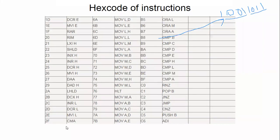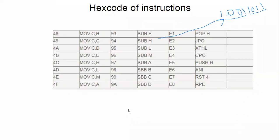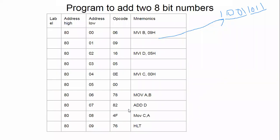These are all the mnemonics and their equivalent hex codes. JMP without any condition is C3. JNZ — jump on no zero — is C2. Depending upon the flag bits, if you want to check the zero flag bit and change the flow of the program, you can use JNZ. Now we'll see a small program and then explain — this program is mainly for addition of two numbers.